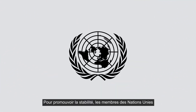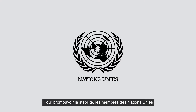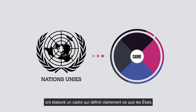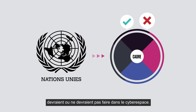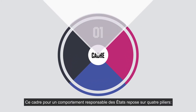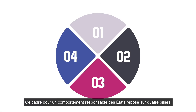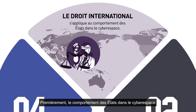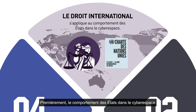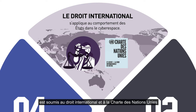To promote stability, the members of the United Nations have developed a framework that clearly articulates what states should and should not do in cyberspace. This framework for responsible state behaviour has four pillars. The first is that international law, including the Charter of the United Nations, applies to state conduct in cyberspace.